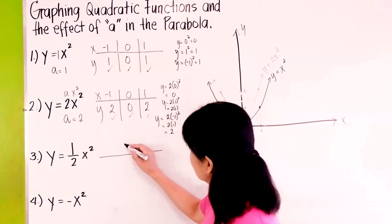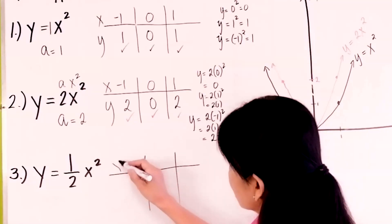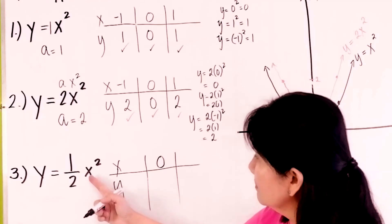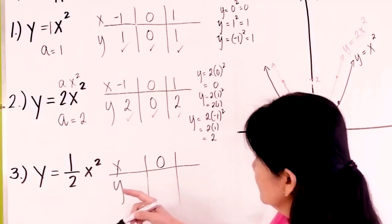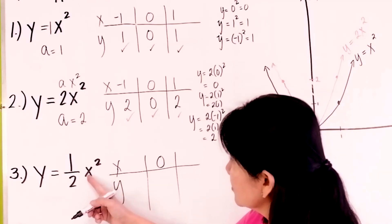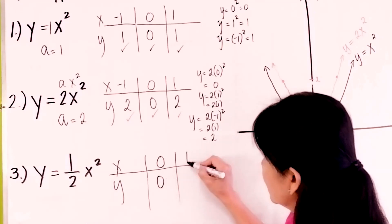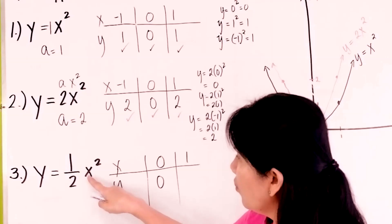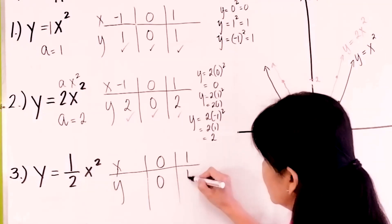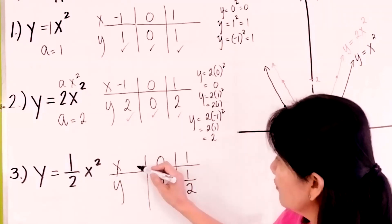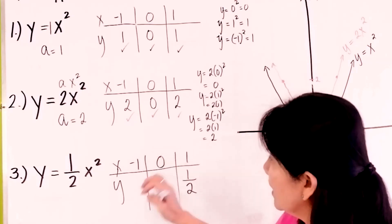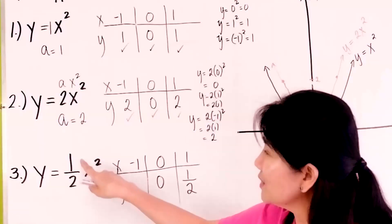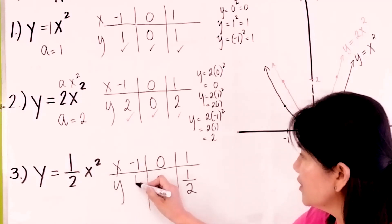Again, we plot some points for x and y. We let x be 0: 0 squared is 0, and 0 times 1 half is 0. When x is 1, 1 squared is 1, and 1 times 1 half is 1 half. And if we let x be negative 1, negative 1 squared is 1 times 1 half, which gives you 1 half.